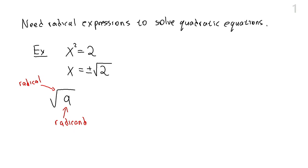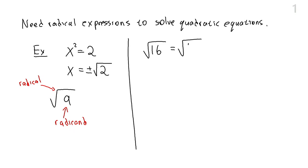Evaluating square roots, we ask to undo the taking-a-square operation. For example, if we wanted to evaluate the square root of 16, this is the principal square root, so we take the positive one. This is the square root of 4 squared, giving us 4. In general, with perfect square roots, if we have the square root of a squared, the answer is just a. We are assuming that whatever we are putting under the square root is positive.